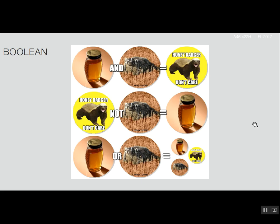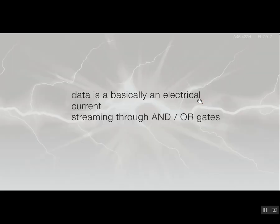If you use Grasshopper, you know the result is what's known as a Boolean — true/false, or 0/1 — which is essentially a binary code. Data is basically an electrical current streaming through AND and OR gates. That's what you're using right now in computers, where data is being streamed electronically through AND and OR gates to create GIS.